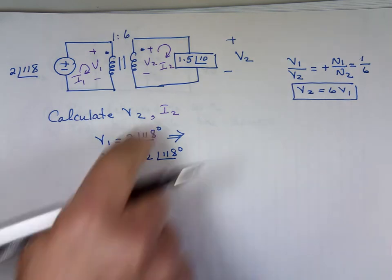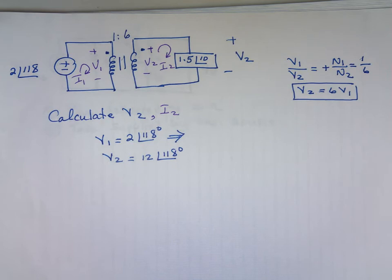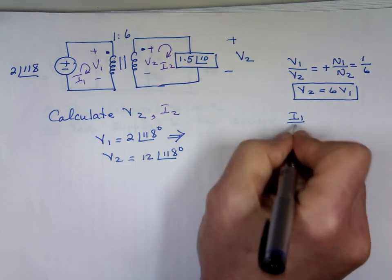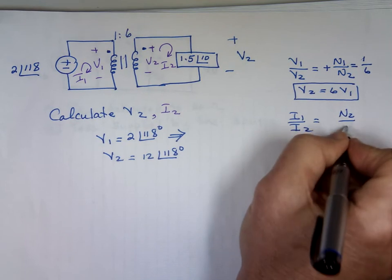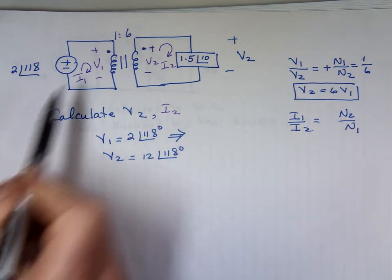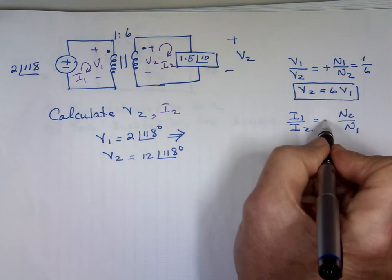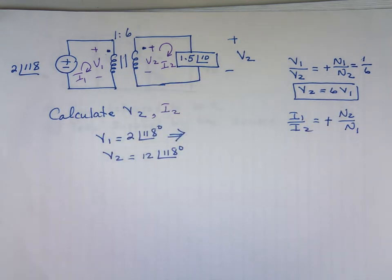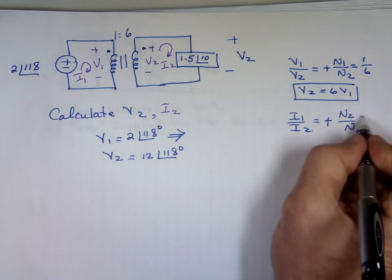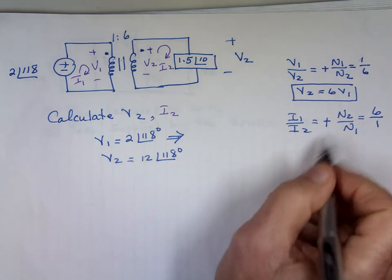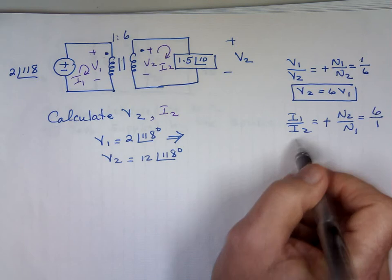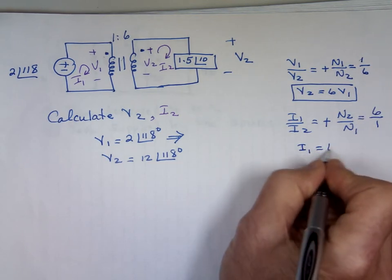If I look at that, v2 is going to be 6 times this number, which is 12 angle 118 degrees. So if I left it like this I'm done. That's why I asked for I sub 2, otherwise it's too tiny of a problem. What's the relationship of I sub 1 and I sub 2? I sub 1 to I sub 2, I know it's n2 to n1, but again is it positive or is it negative? I get I sub 1 entering the dot. I sub 2 here is not entering the dot, the other end, so that's a positive.